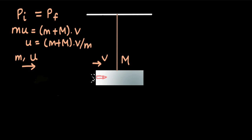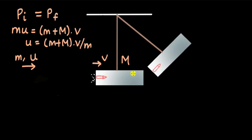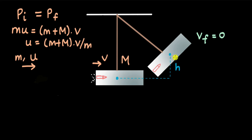After the collision, the block and bullet move forward and swing like a pendulum, reaching a certain height h — measured from the center of the block — where the system comes to rest. They start with some velocity V and reach zero velocity at height h. They gained gravitational potential energy, and that energy came from their initial kinetic energy.